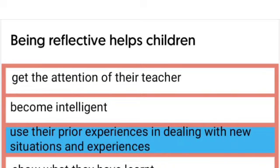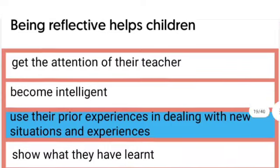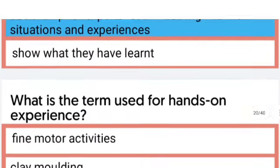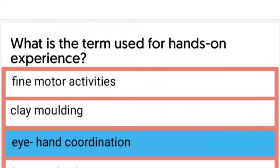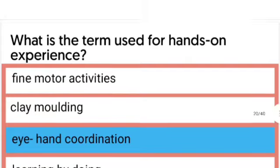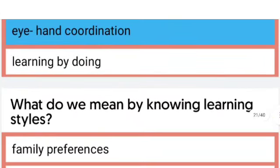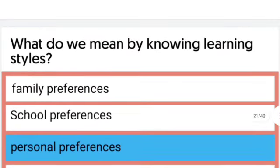What is the term used for hands-on experiences? The term used for hands-on experiences is eye-hand coordination. The next one: What do we mean by knowing learning style?